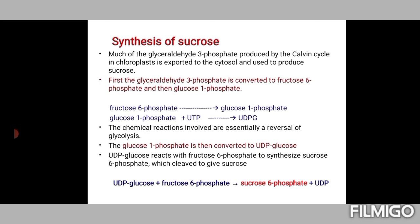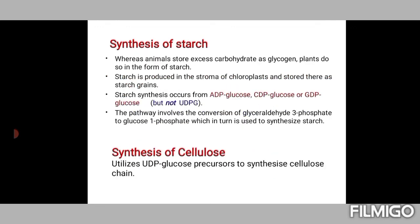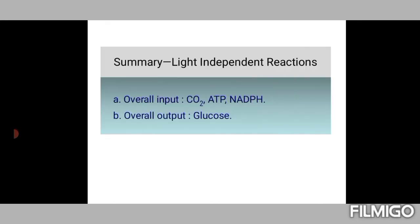From fructose 6-phosphate formed by condensation of glyceraldehyde 3-phosphate, we can produce glucose 6-phosphate, then glucose 1-phosphate. Glucose 1-phosphate combines with uridine triphosphate to give UDPG, which is a precursor for sucrose synthesis. ADPG, CDPG, or GDPG can also be produced as precursors of starch — but not UDPG, which is instead used for cellulose synthesis. Overall, the input of the dark reaction is CO₂, ATP, and NADPH, and the output is glucose and other derivatives.